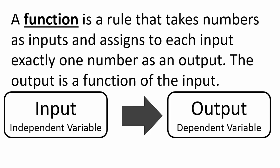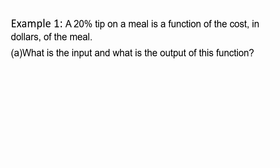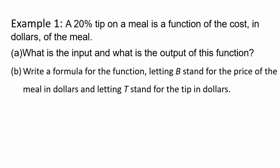Let's do some examples then. So this first example, we have a 20% tip on a meal, it's a function of the cost in dollars of the meal. So what is the input? What is the output? Can you write a formula for a function where we may have to say some variables for each of the input and output? Let B stand for price of the meal in dollars and let T be tip in dollars.